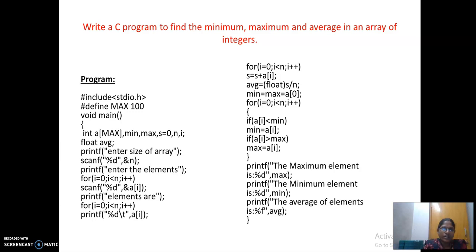This is the program to find the minimum and the maximum and average in an array of elements. I am declaring A of max. What is the max value? I have declared symbolic constant max as 100. That means, I am declaring an array of size 100. Minimum value, maximum value, s is equal to 0, n, i. Average will always be in your float. You will read the size of the array. You will read the elements using scanf. You will print the elements using printf.